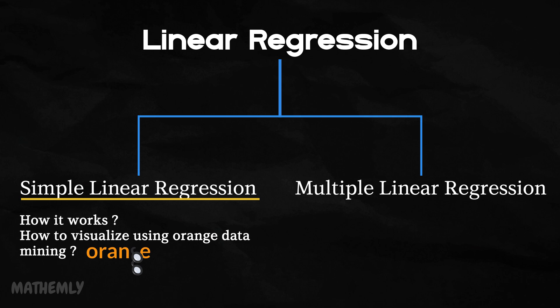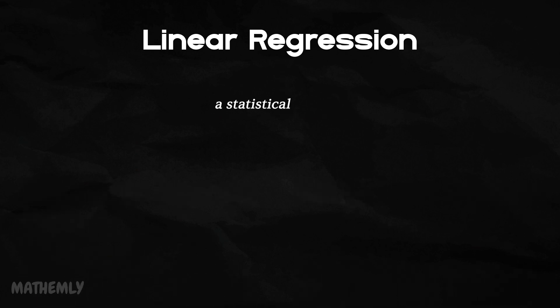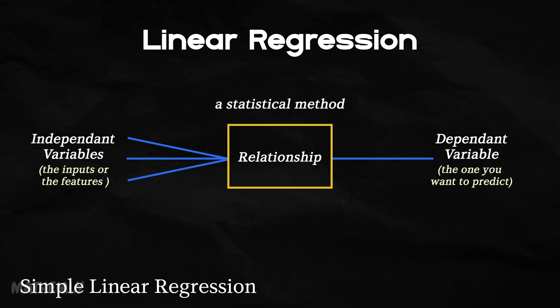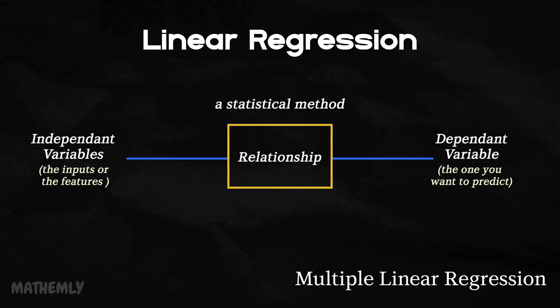Let's get started. Linear regression is a statistical method used to model the relationship between a dependent variable, which is the one you want to predict, and one or more independent variables, which are the inputs or the features. There are two main types of linear regression. Simple linear regression involves just one independent variable, the input, and one dependent variable, the output. Multiple linear regression extends to multiple independent variables.